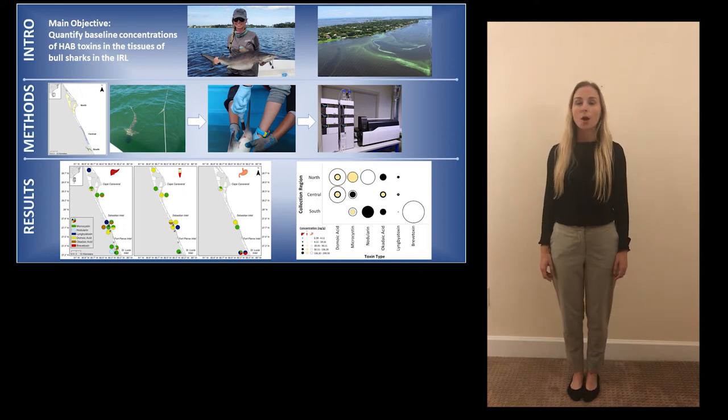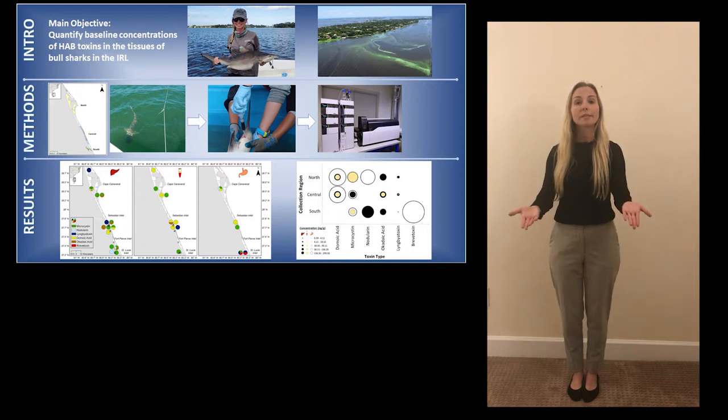Harmful algal blooms, or HABs, are episodic events that occur when phytoplankton grow out of control and sometimes release toxins into the environment.